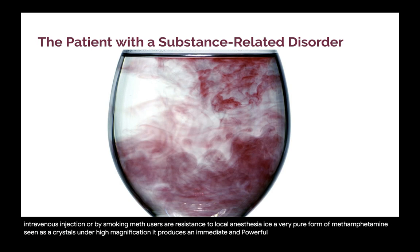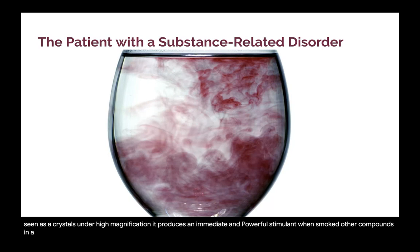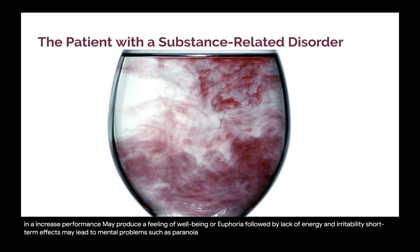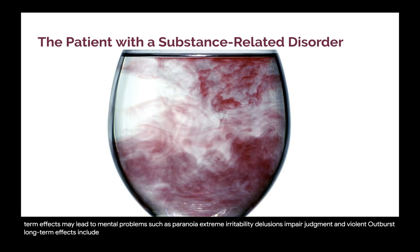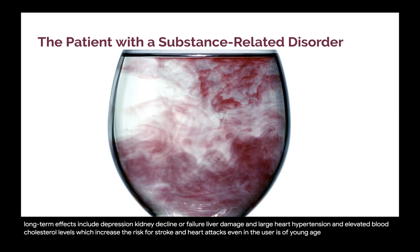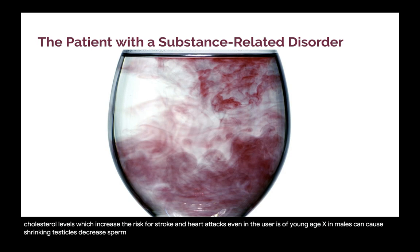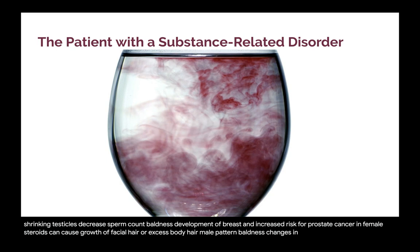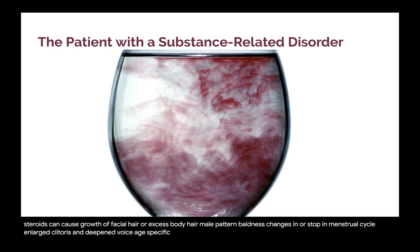Anabolic steroids: used to build muscles for increased performance, may produce a feeling of well-being or euphoria followed by lack of energy and irritability. Short-term effects may lead to mental problems such as paranoia, extreme irritability, delusions, impaired judgment, and violent outbursts. Long-term effects include depression, kidney decline or failure, liver damage, enlarged heart, hypertension, and elevated blood cholesterol levels, which increase the risk for stroke and heart attacks even in young users. Gender-specific effects in males include shrinking testicles, decreased sperm count, baldness, development of breasts, and increased risk for prostate cancer. In females, steroids can cause growth of facial hair or excess body hair, male pattern baldness, changes in or stopping of the menstrual cycle, enlarged clitoris, and deepened voice.